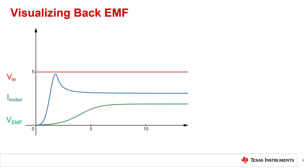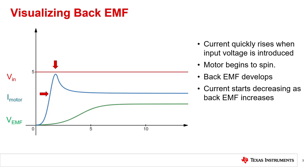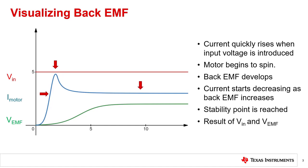In this graph, we can appreciate the relationship between motor voltage, current through the motor, and back EMF voltage generated. We can see that the current quickly rises when we introduce a voltage, which causes the motor to spin. As the motor ramps up in speed, back EMF will develop, which will in turn cause the current to decrease. Eventually, it will reach a stability point that is the result of motor voltage and back EMF. Notice that this graph describes the circuits presented on the previous slide.